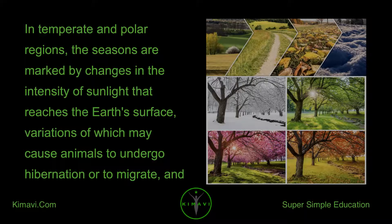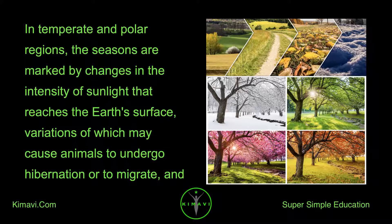In temperate and polar regions, the seasons are marked by changes in the intensity of sunlight that reaches the Earth's surface, variations of which may cause animals to undergo hibernation or to migrate, and plants to be dormant.